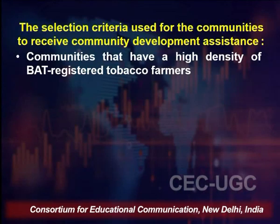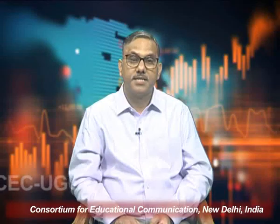Now, what is the selection criteria used for communities to receive community development assistance? The communities which have a high density of BAT-registered tobacco farmers: wherever the density of those farmers is high, that is where they contribute. Suppose I am selecting an area — I would choose that segment where the number of registered tobacco farmers is on the higher side, because the company thinks it should work for those suppliers, those farmers who are actually providing raw material to the company.